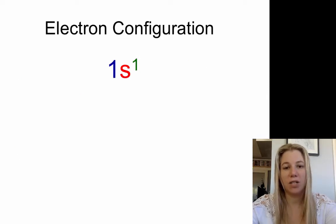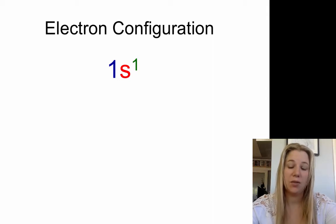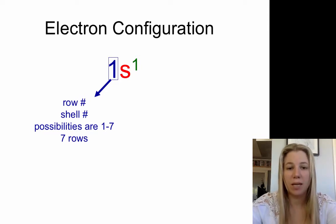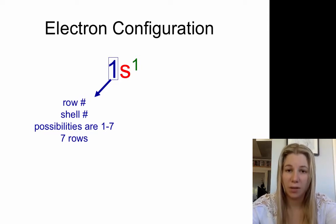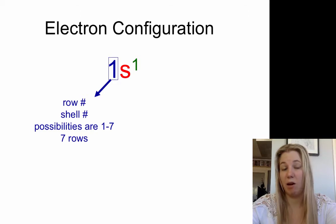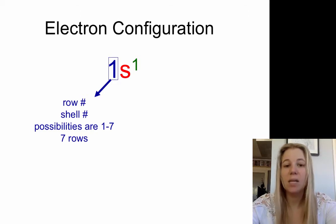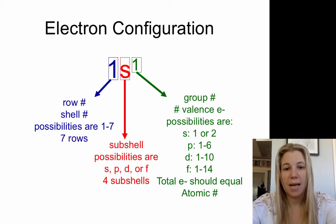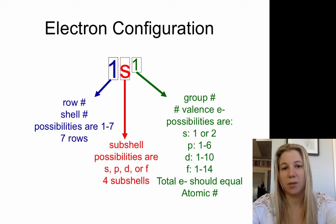Firstly, the electron configuration looks a bit like this. So the number at the front is referring to the actual period on the periodic table. So this one here is referring to the first row, so that would be looking at either hydrogen or helium. And this number here is referring to the number of electrons that are in that specific shell, or in that specific orbital. And here this is referring to which orbital it is, whether it's an S, P, D, or F orbital.